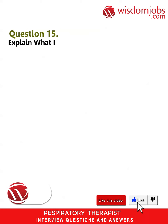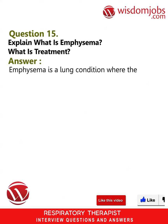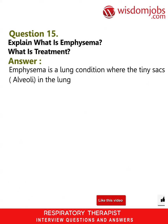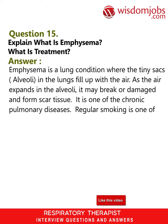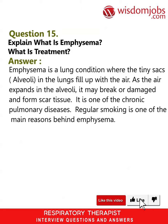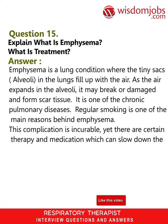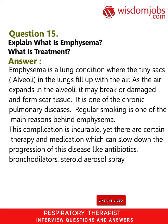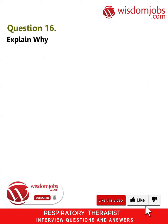Question 15: Explain what is emphysema and its treatment. Answer: Emphysema is a lung condition where the tiny sacs (alveoli) in the lungs fill up with air. As the air expands in the alveoli, it may break or become damaged and form scar tissue. It is one of the chronic pulmonary diseases. Regular smoking is one of the main reasons behind emphysema. This complication is incurable, yet certain therapies and medications can slow down the progression of this disease.